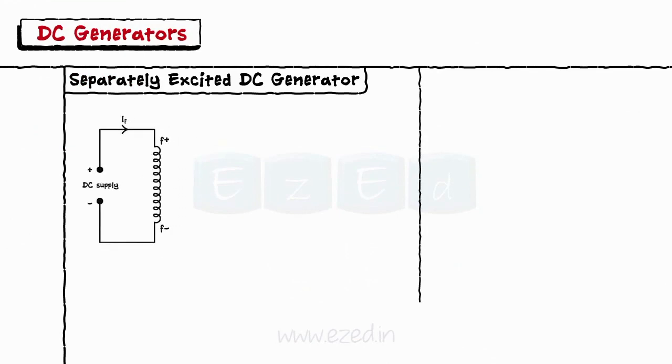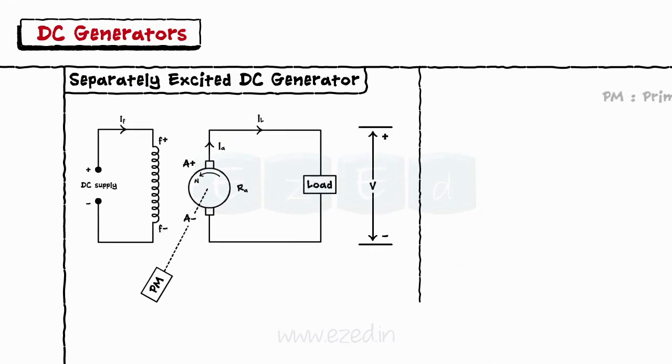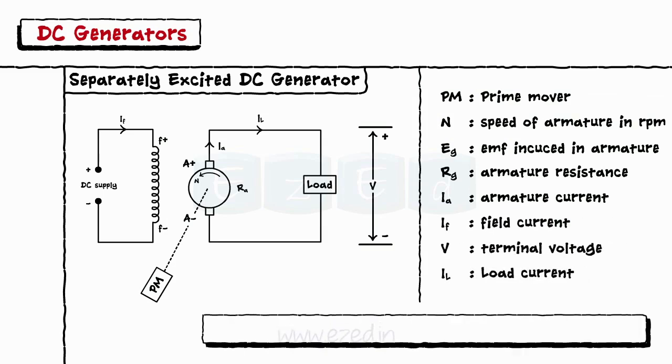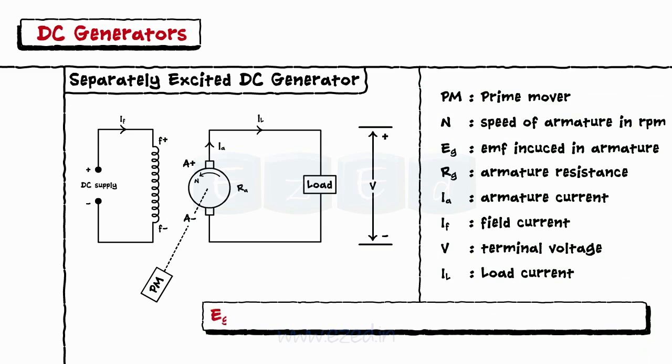In the separately excited DC generator, the field winding is supplied from the external separate DC supply. The EMF induced is given by the equation EG equals load voltage V plus IA into RA plus the voltage drop across brushes plus armature reaction drop.